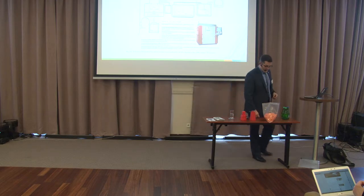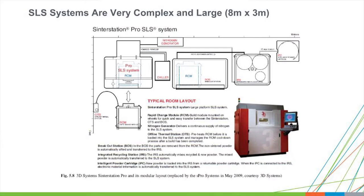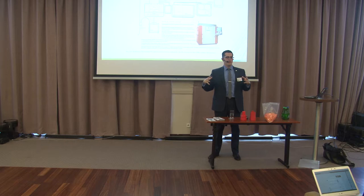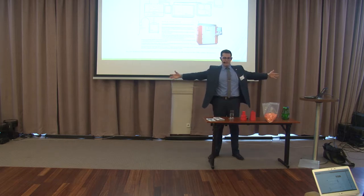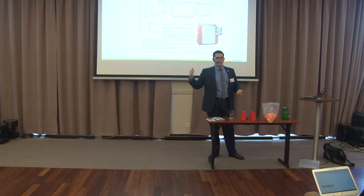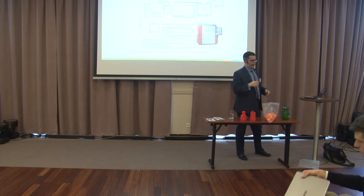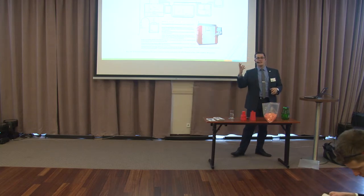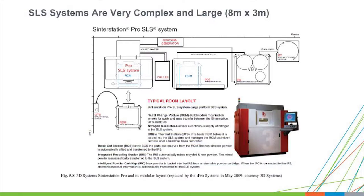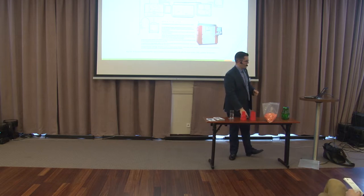One of the other main drawbacks is that in order to print something about this size in a selective laser sintering machine, you need at least a machine that's this big — about 3 meters by 5 meters. And it's not just the machine: there are powder handling systems and a furnace needed afterwards to make sure the part is of good quality.